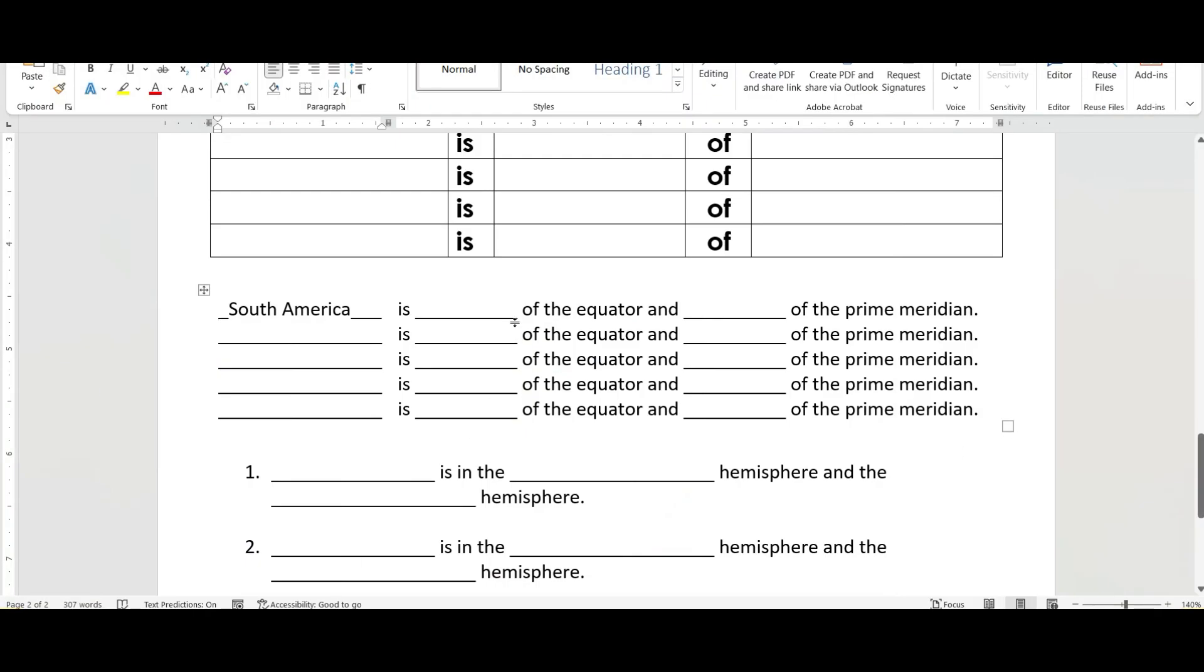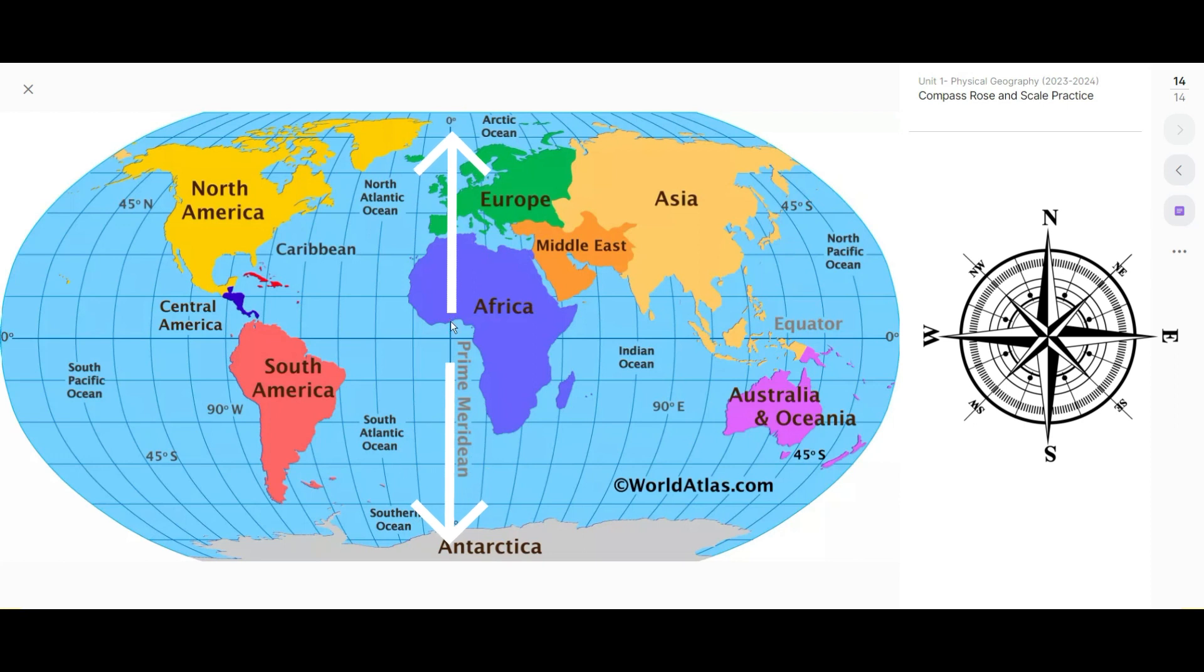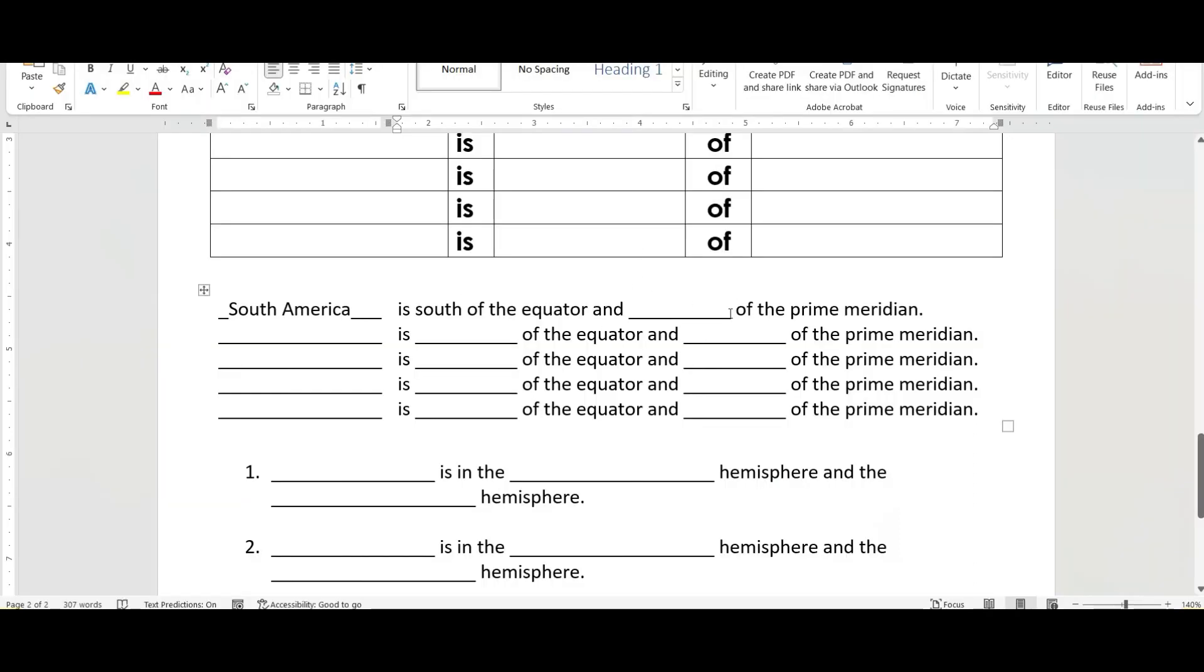Hopefully you can see that South America is south of the equator. And here's the prime meridian, it's also west of the prime meridian. It's south of the equator and west of the prime meridian.